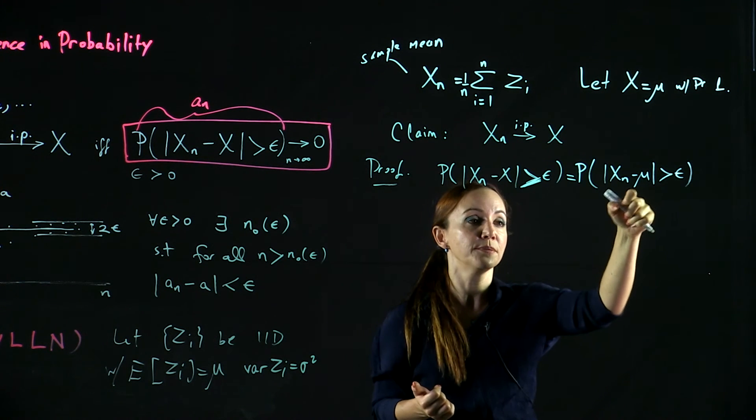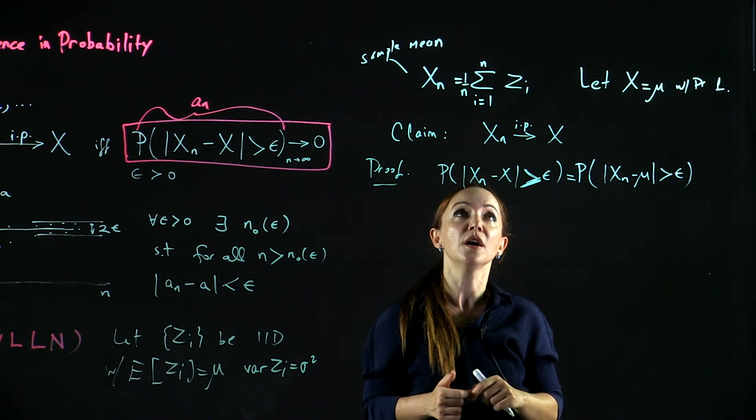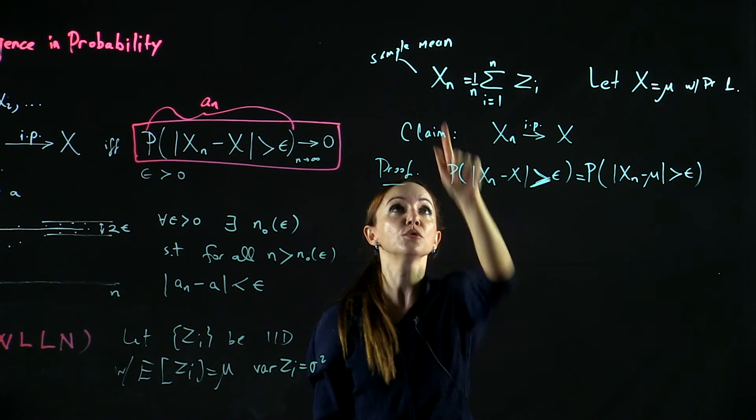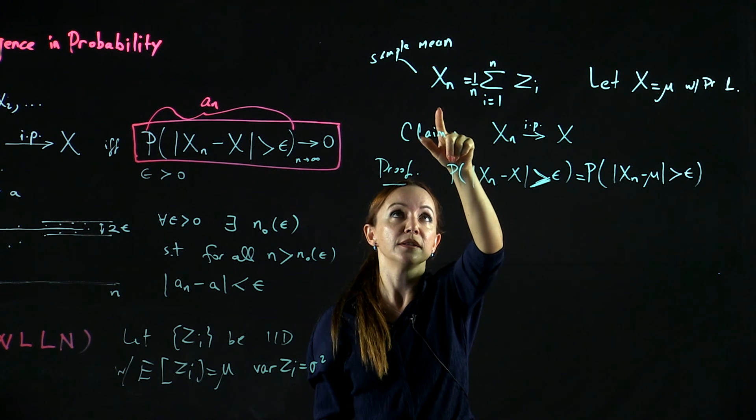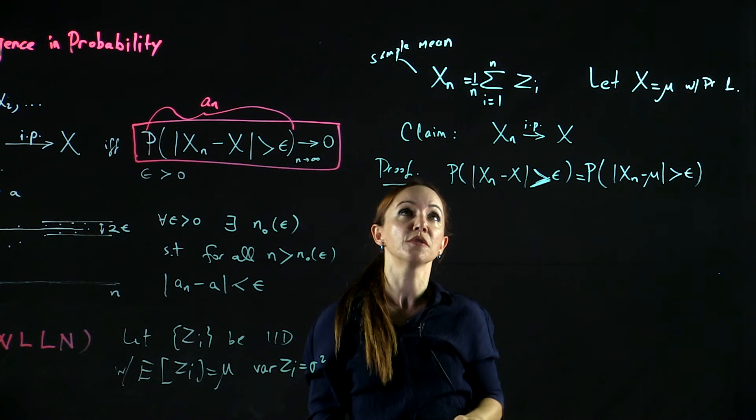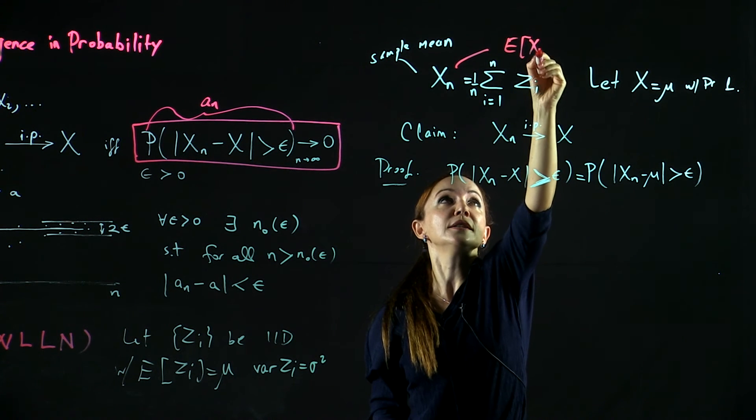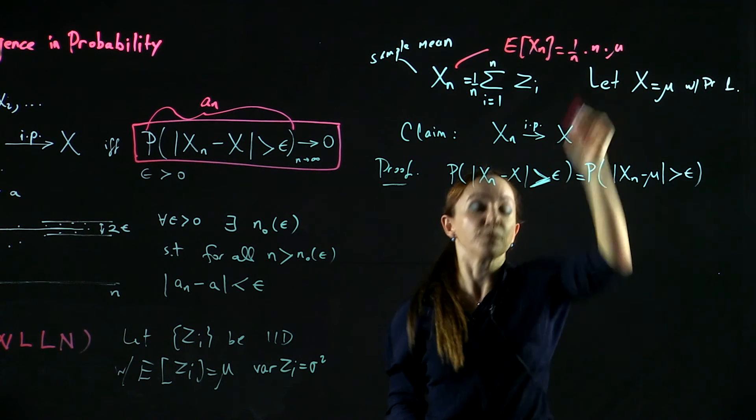But then we have Chebyshev inequality which says this probability that XN differs from its mean. How do we know that mu is the mean of XN? Well, if you look at this definition of XN, due to the linearity of expectation, it follows that the expectation of XN is 1 over N times N times mu, which is mu.